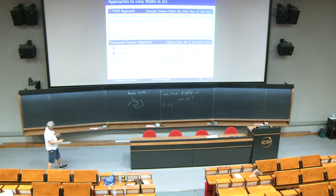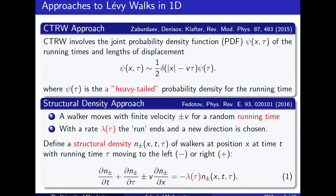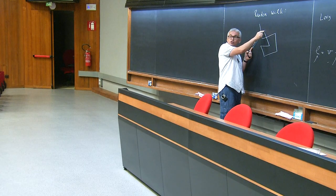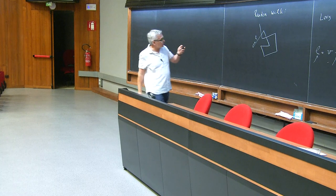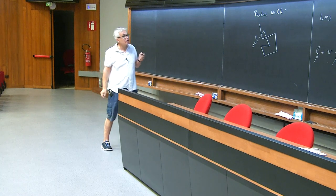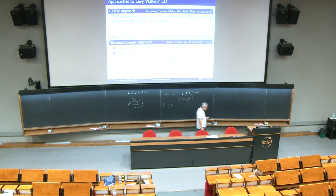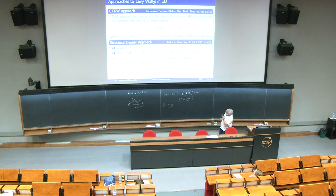This is a standard procedure in stochastic processes: we extend the phase space to make a non-Markovian process Markovian. We introduce a structural density — the particle moving right and left, position x at time t — then we introduce the extra running time and the rate of change. The rate at which the particle changes direction depends on that running time. I'll discuss this in 1D now, but it can be extended easily to 2D.